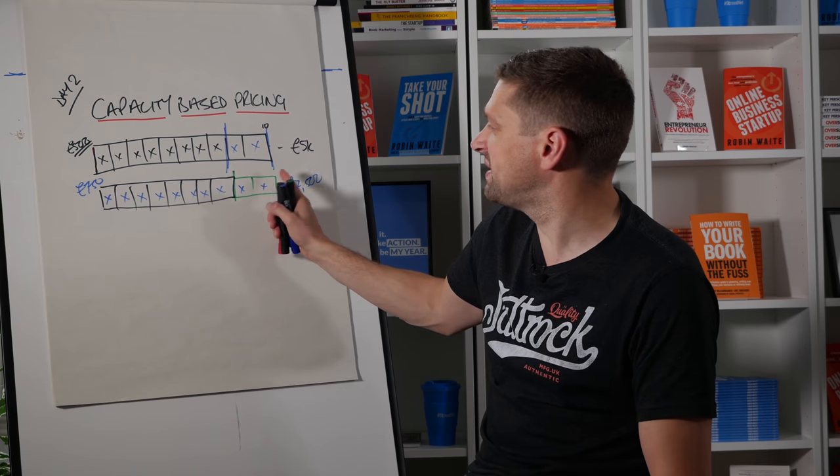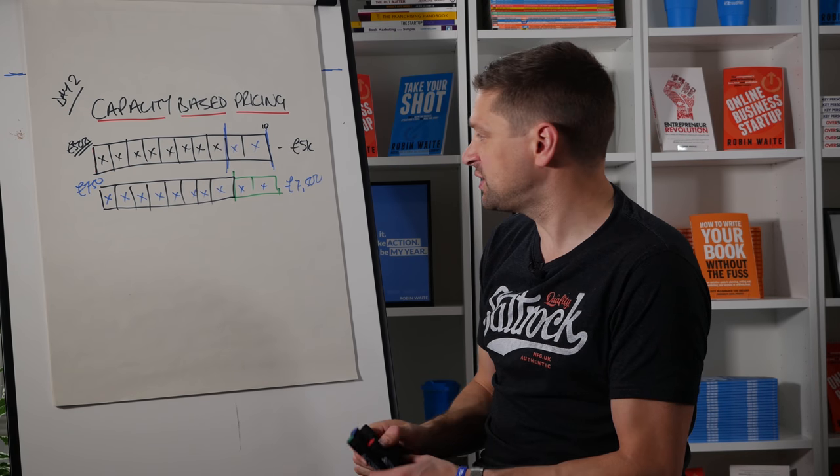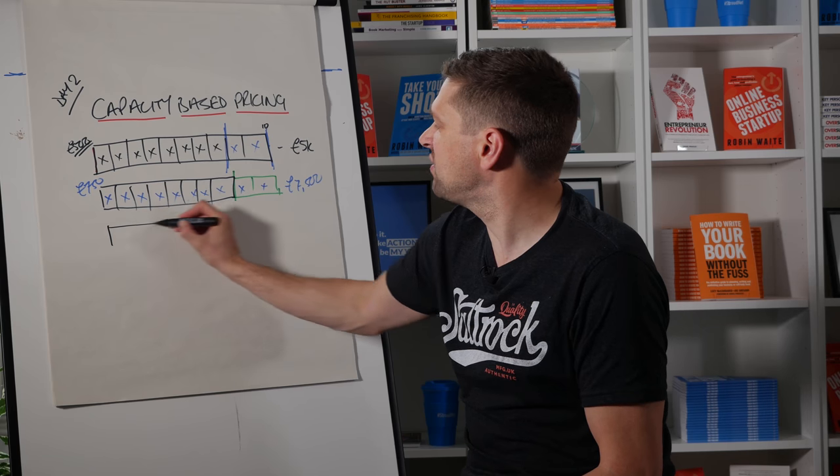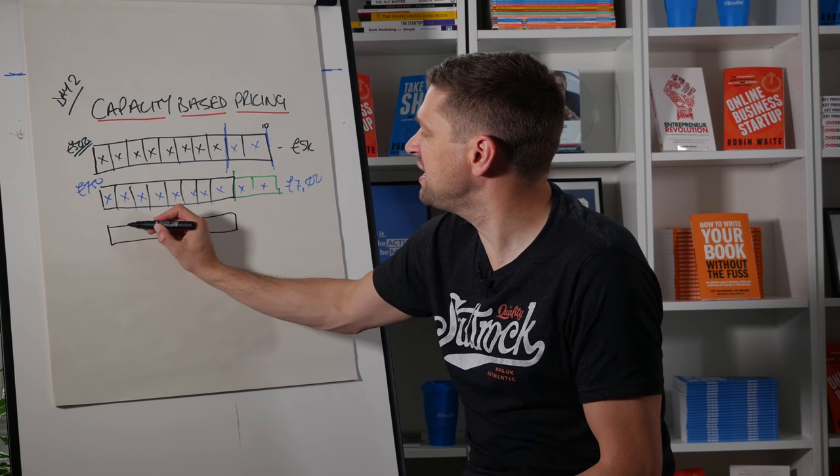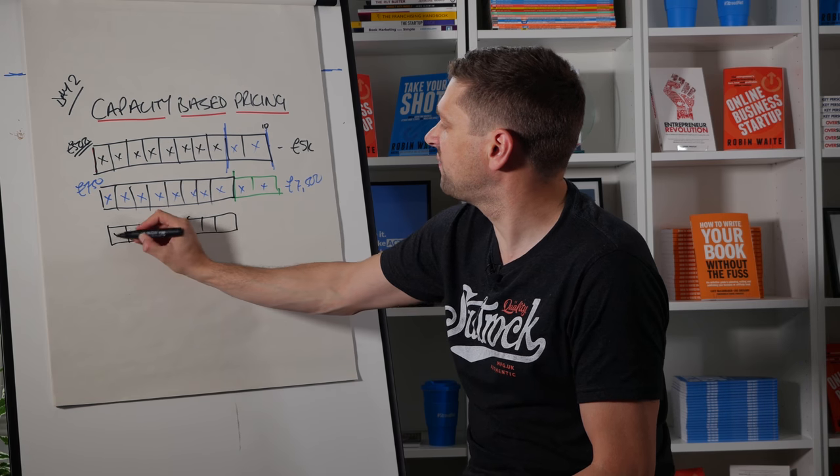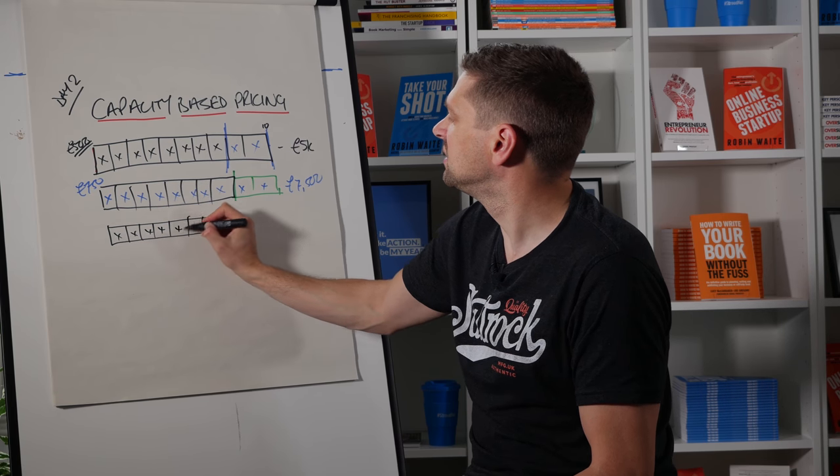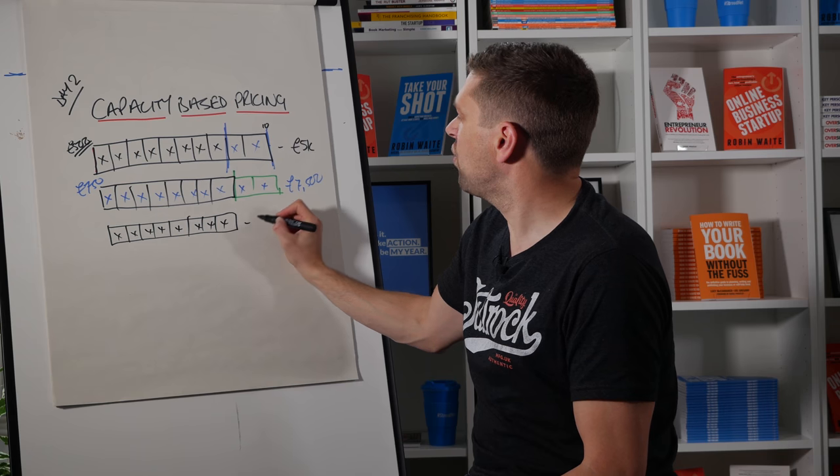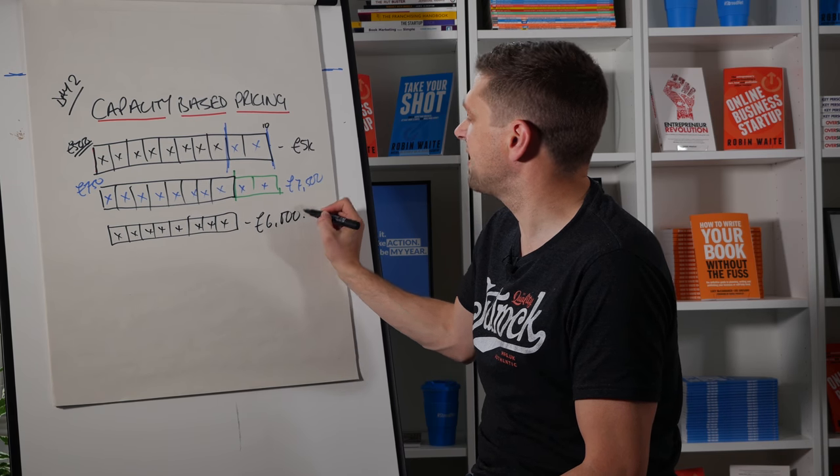But here we still don't have any time back. So what you could do is reduce down your capacity. Maybe we'll have eight units of capacity. We'll still charge £750. And what this does is nets us out at about £6,000.